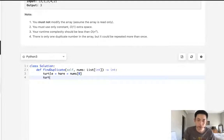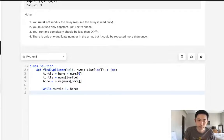So the first thing we're going to do is let's move up our turtle position one. So that's going to be just nums of the turtle position. And as for the hare, we're going to move it with the nums of the nums of hare. So that moves that one position. So while turtle does not equal hare, we're just going to continue this algorithm.